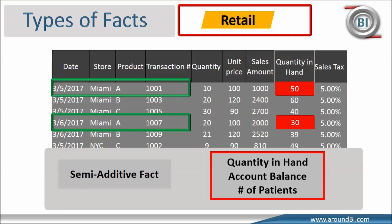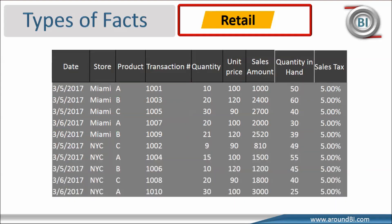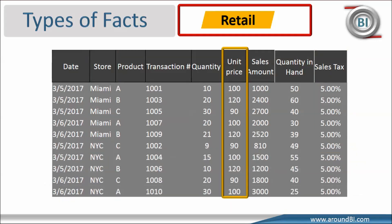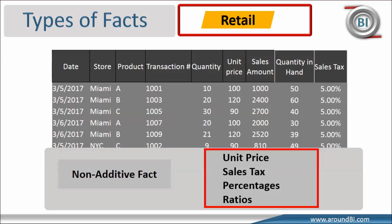Our third type of fact is the non-additive fact, which cannot be aggregated towards any dimension in the table. If we look at sales tax, which is 5% across all products and all stores, combining 5% for Miami across five transactions gives 25%, which would be incorrect to apply to the sales amount. Similarly, it cannot be aggregated for any product or date, making it a good example of a non-additive fact. Unit price also cannot be summarized along any dimension — even averaging unit price is meaningless and provides no valid business conclusion. So it is also an example of a non-additive fact. Other good examples of non-additive facts are percentages and ratios, as summing them along any dimension is pointless in business terms.